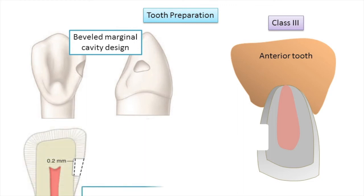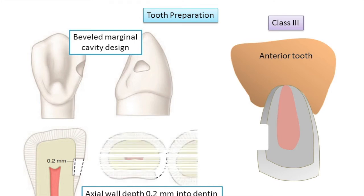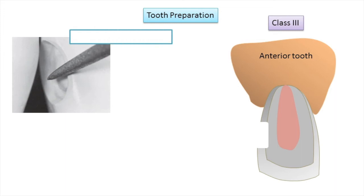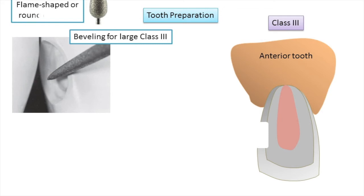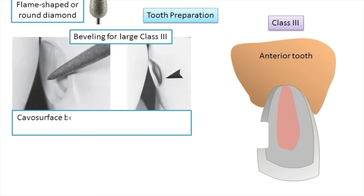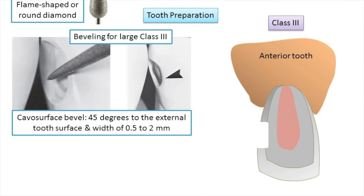Ideally, the initial axial wall preparation depth involves an incisogingival axial wall about 0.2 millimeters into the dentine. In the facial-lingual section, the facial extension and the axial wall tend to follow the contour of the tooth. Larger preparations may require additional beveling of accessible enamel walls to enhance retention by bonding. These enamel margins are beveled with a flame-shaped or round diamond instrument at a 45-degree angle to the external surface, to a depth of about 0.5 to 2 millimeters, depending on the size of the preparation, margin location, and aesthetic requirements.